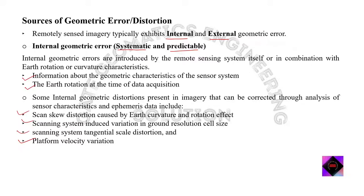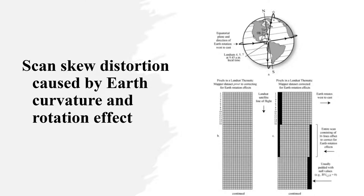Let's start with scan skew distortion, caused by earth curvature and rotation effects. Earth-observing sun-synchronous satellites are normally in a fixed orbit, revolving in their own fixed orbit, and they collect a swath of imagery as the satellite moves from north to south in a descending order. Meanwhile, the earth below rotates on its axis from west to east, making one complete revolution every 24 hours. This interaction between the fixed orbital path of the remote sensing system and the earth's rotation on its axis is called scan skew distortion.